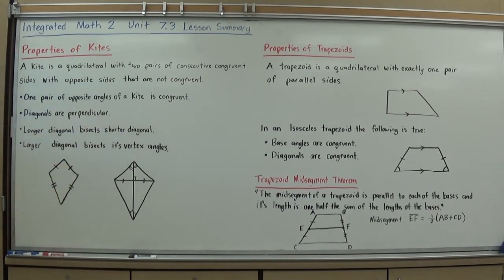Now some extra rules with kites involving diagonals. One thing is, one pair of opposite angles of a kite is congruent, so that is true.